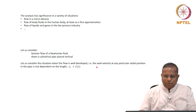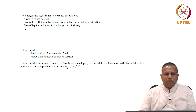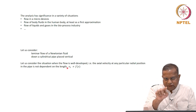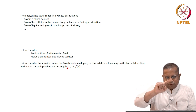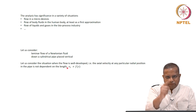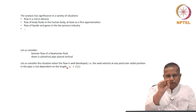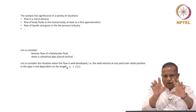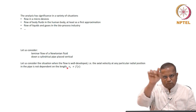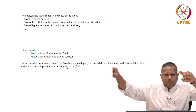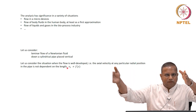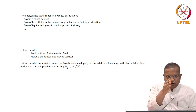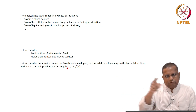The definition of well-developed flow: the axial velocity at any particular radial position in the pipe is not dependent on the length. In a cylindrical pipe, the velocity at a particular radial point is the same along the length. The velocity at the center differs from that near the wall, but the velocity near the wall is the same irrespective of the axial distance — across the cross section there is variation, but across the length there is not.